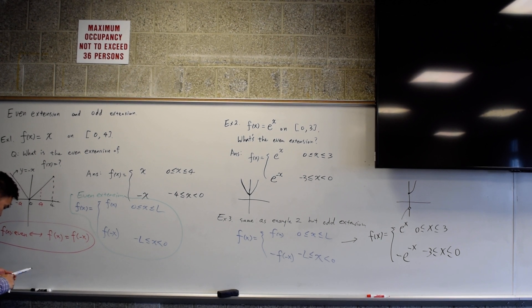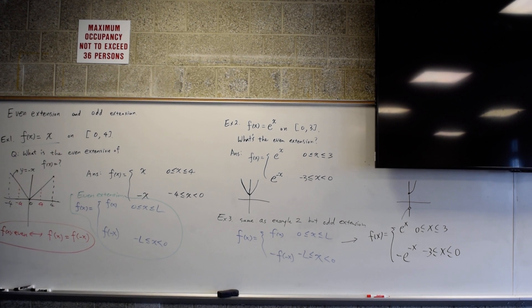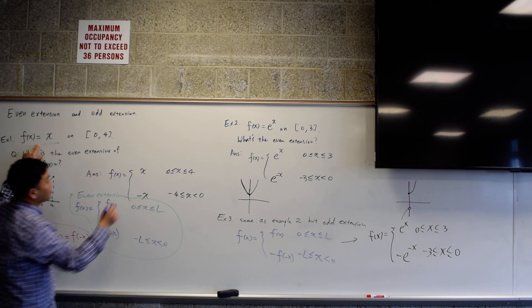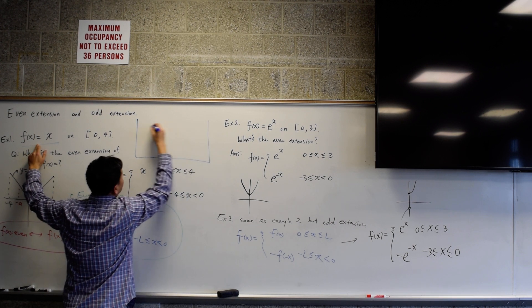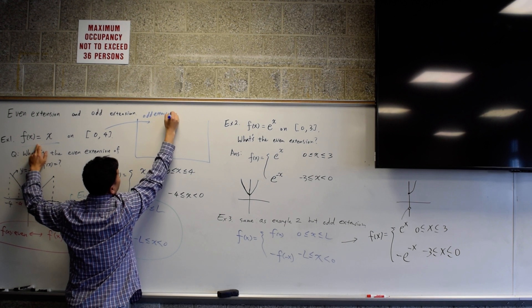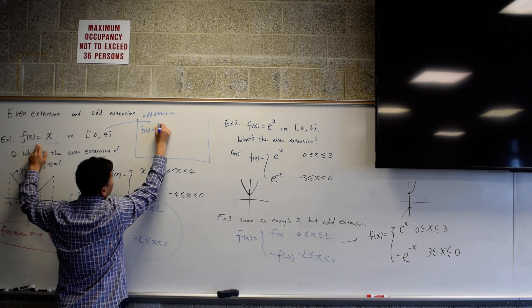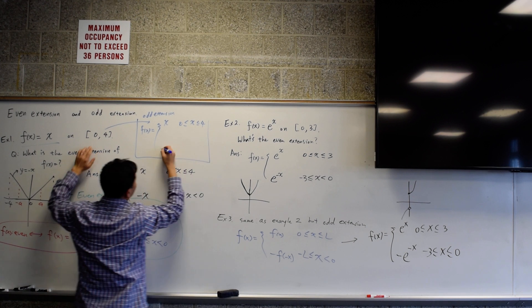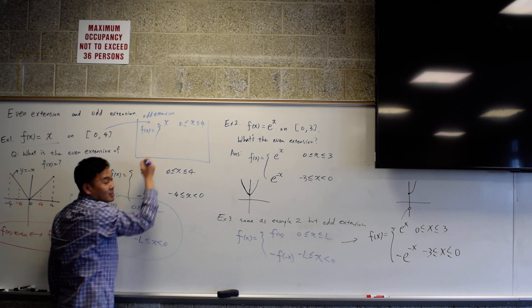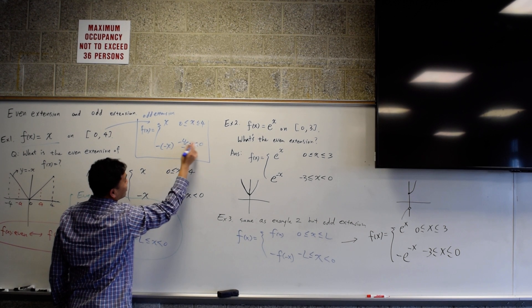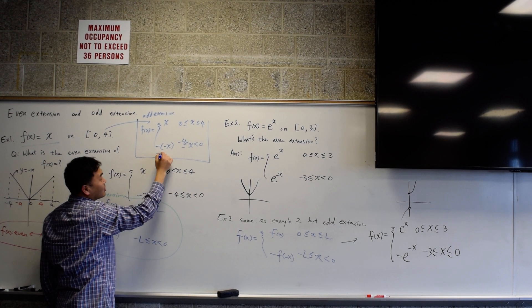The final comment here, what would you get if you took this function and took an odd extension? Let's think about that. If we took the odd extension, so if I took this and an odd extension, then you would have your function as x. If x doesn't change for x between 0 to 4, what would I write here? It would be negative of negative x from negative 4 to 0, but negative of negative x is x, positive x.